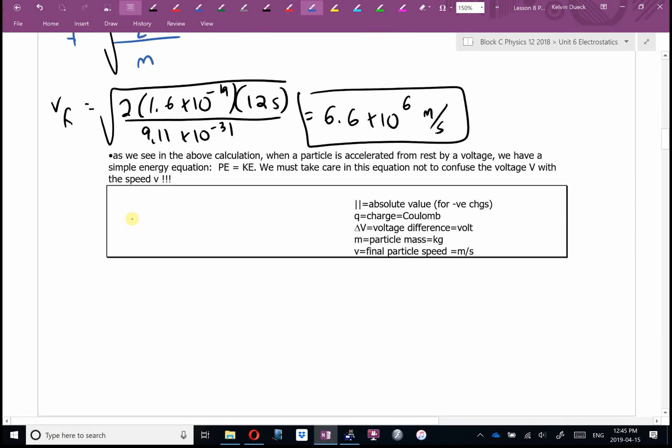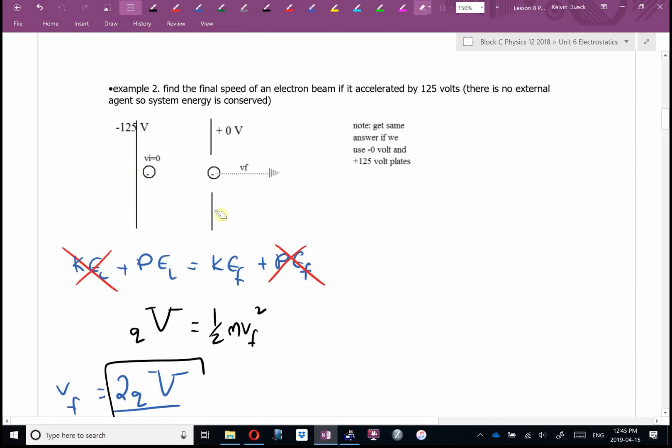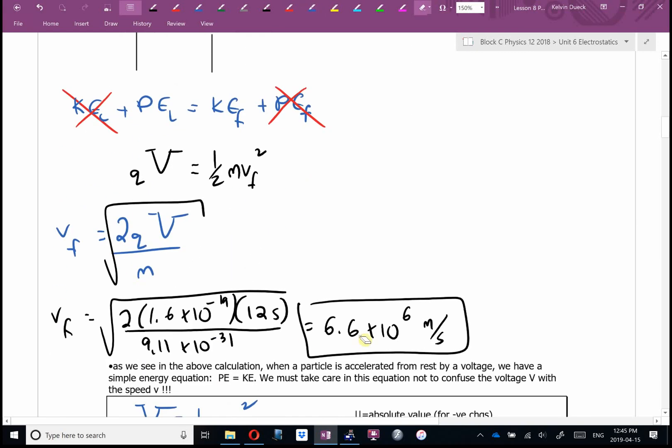If we start at rest and we pass all the way through a voltage, really what we're saying is all of its potential energy turned into kinetic energy. But just don't confuse V and V. This is the beginnings of particle accelerators. What if I wanted the electron to go faster? Bump up the voltage. What if I wanted it to go slower? Reduce the voltage. And we can start to predict how fast charged particles, electrons and protons specifically, are going to leave our electron gun or our proton gun.